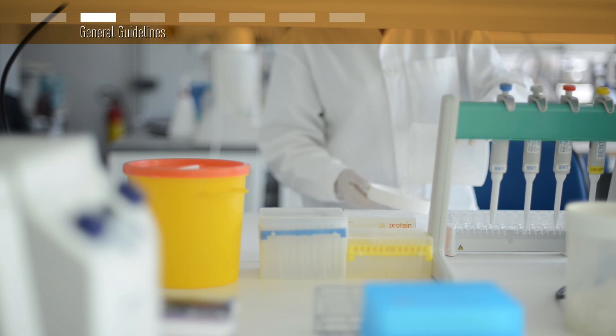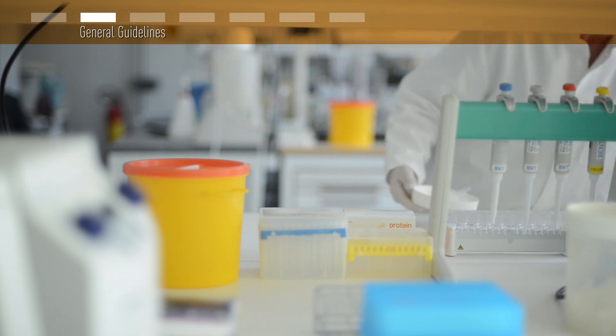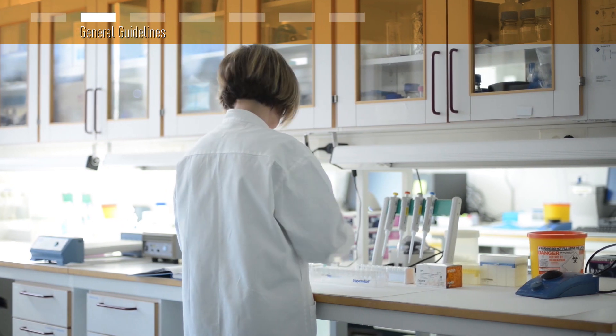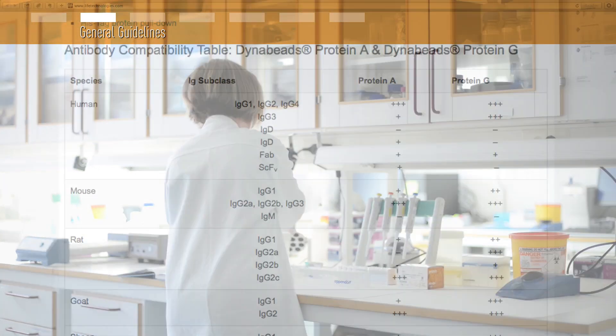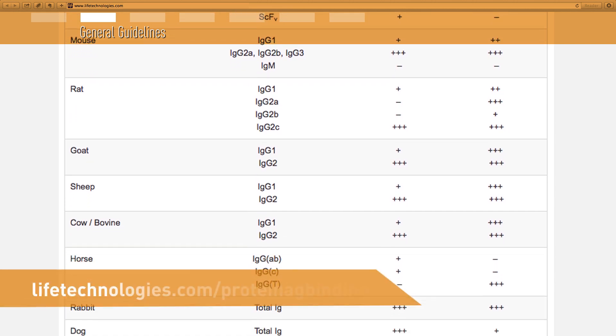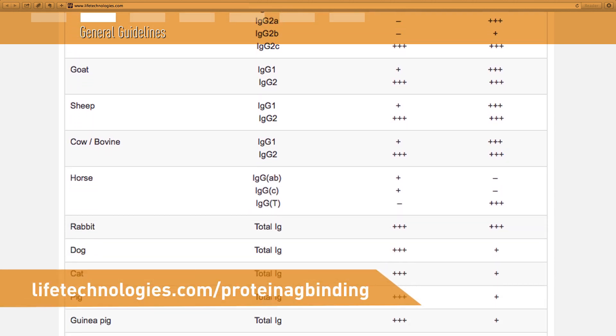Before you start, you need to decide if the DynaBeads with protein A or protein G are best suited for your assay. This will depend on the type of antibody you are using. You'll find an overview of binding strengths of different antibodies in the product manual and on our webpages.